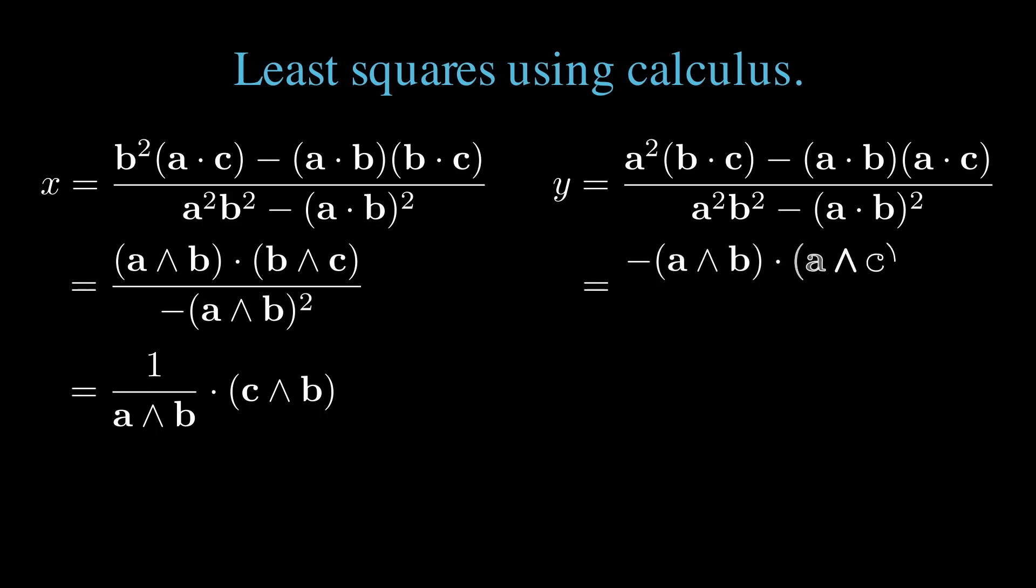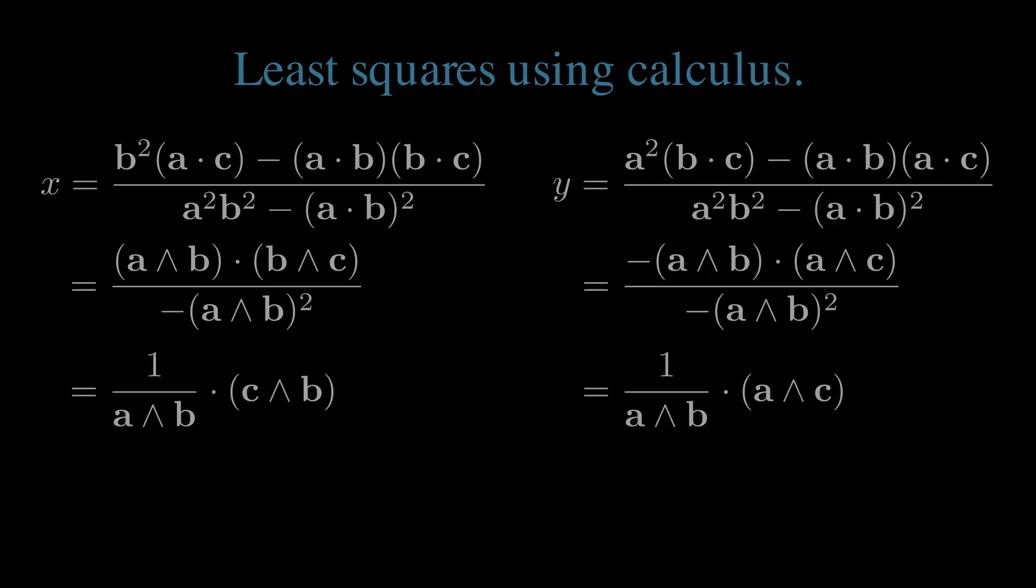For y, we have a similar result. We can see that the numerator is a negative a wedge b dotted with a wedge c, and the denominator again is minus a wedge b squared. We have a wedge b divided by the scalar a wedge b squared, which is 1 over a wedge b. Again, we find y equals 1 over a wedge b dotted with a wedge c. This is exactly what we found previously, looking at the purely geometric problem, finding the best fit for the projection of c onto the plane formed by a wedge b.